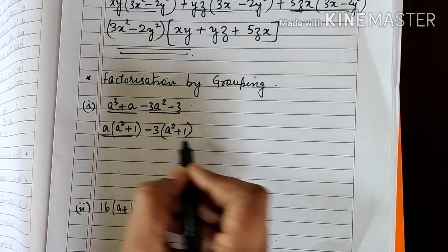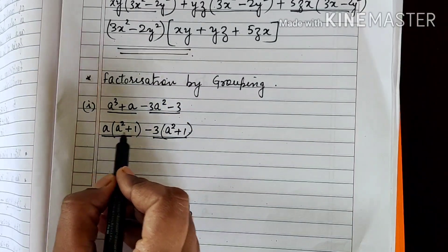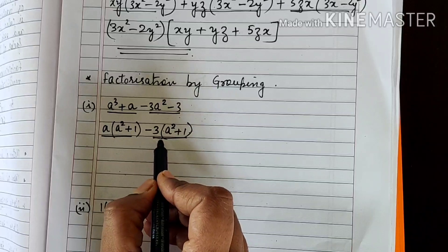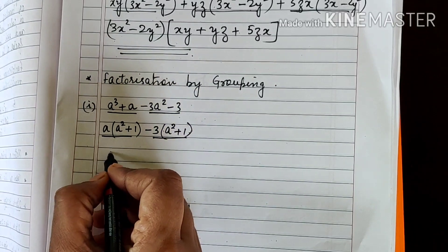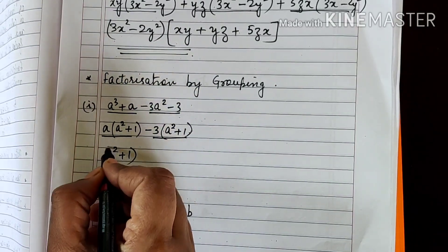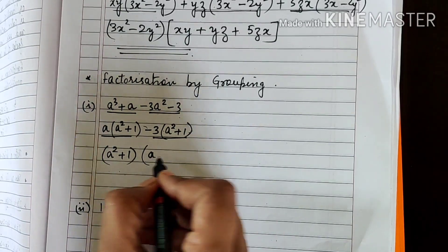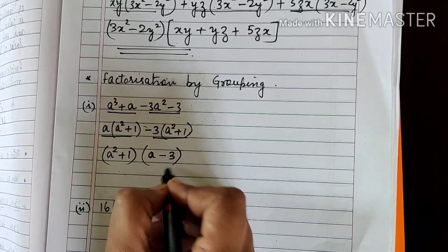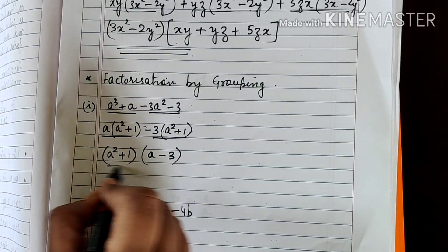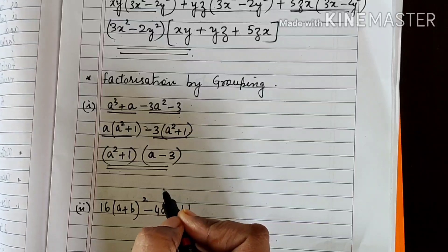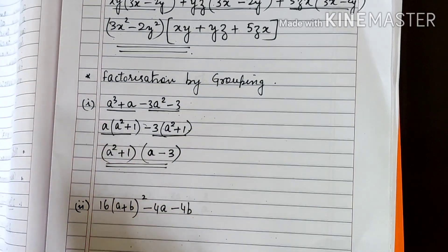Now do further factorization. You have two terms: a(a² + 1) and -3(a² + 1). The common factor is (a² + 1). When you remove it from the first term, you are left with a; from the second term, you are left with -3. So the factors of a³ + a - 3a² - 3 are (a² + 1)(a - 3).